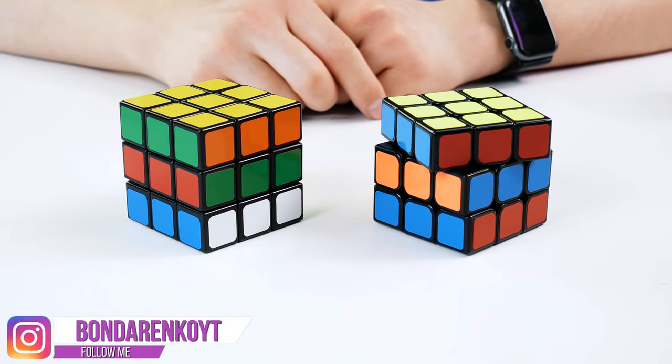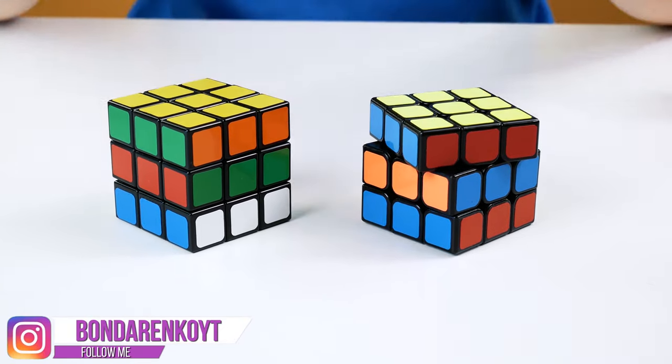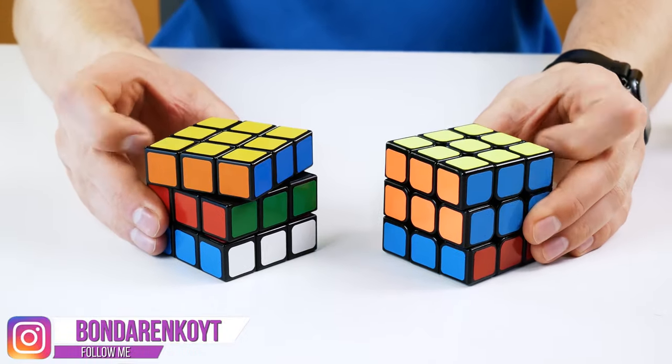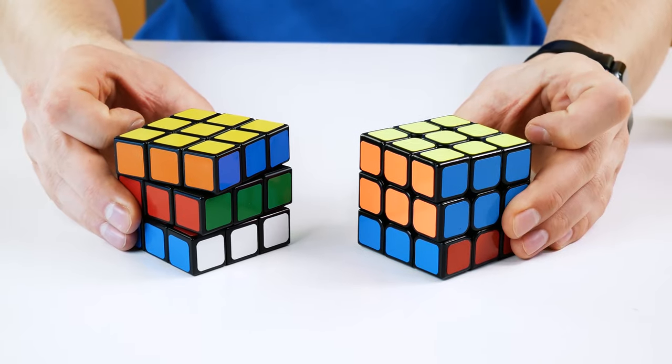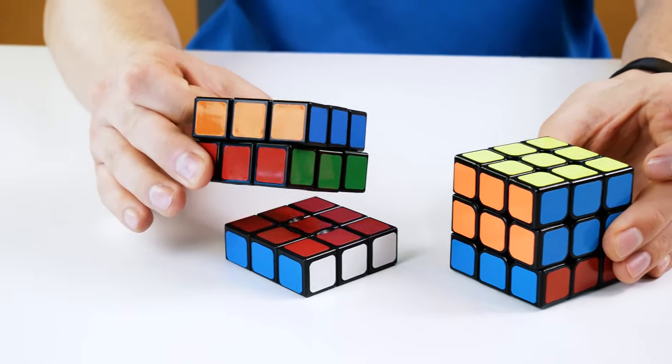There is something wrong with one of these Rubik's cubes. But with which one exactly and what is wrong? Write in the comments. But I'm sure no one will guess. One of these cubes are two cubes.